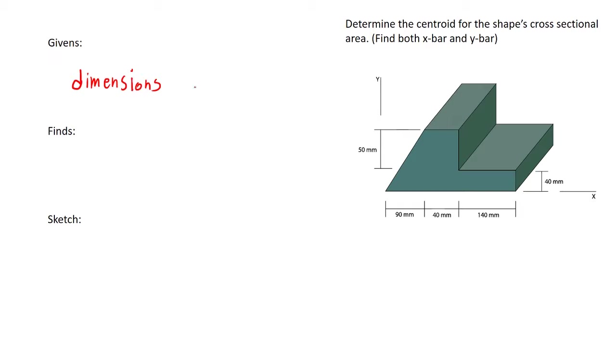So givens, finds, and sketch. These are pretty standard for all engineering classes. Givens in this case are really just gonna be dimensions. We want to find x-bar and y-bar, aka the centroid of this total shape.